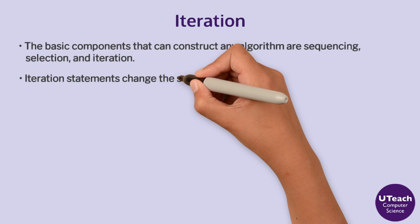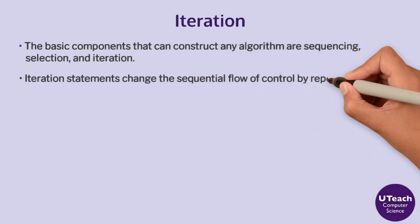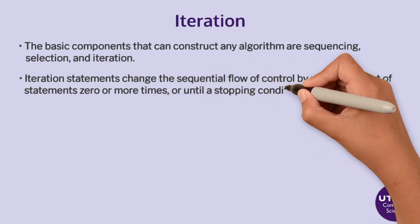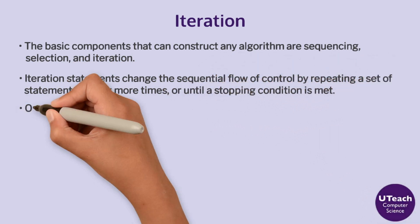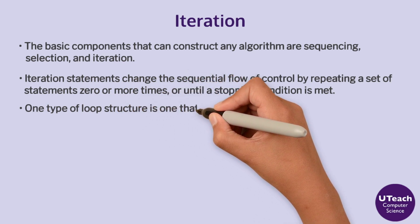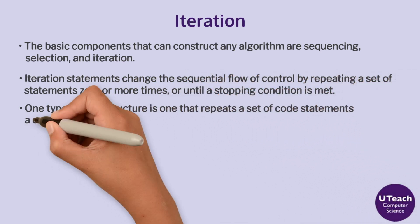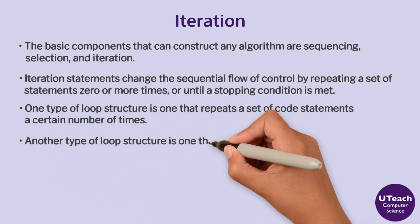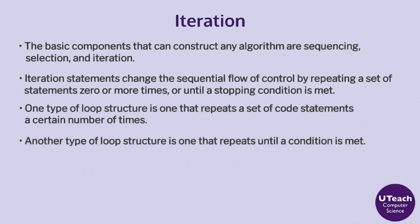Iteration statements change the sequential flow of control by repeating a set of statements zero or more times, or until a stopping condition is met. One type of loop structure repeats a set of code statements a certain number of times. Another type of loop structure repeats until a condition is met.